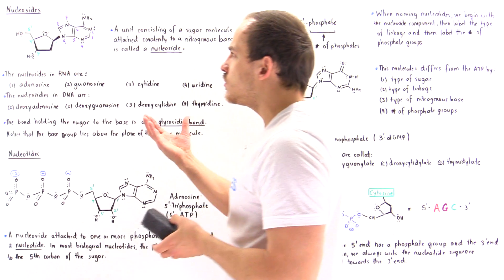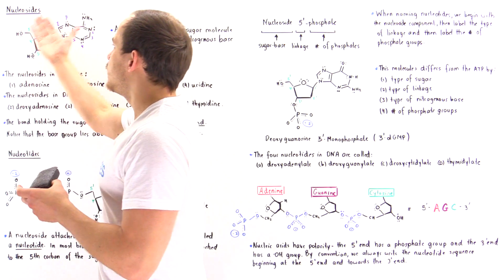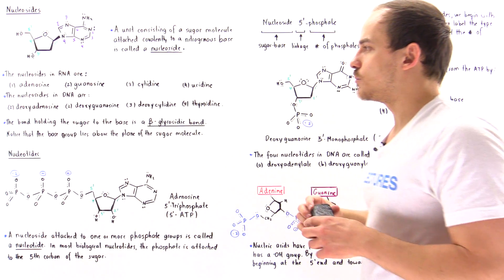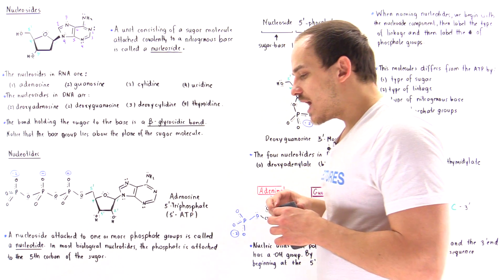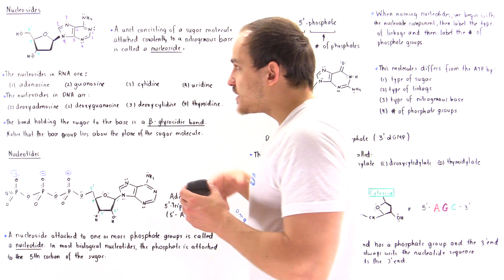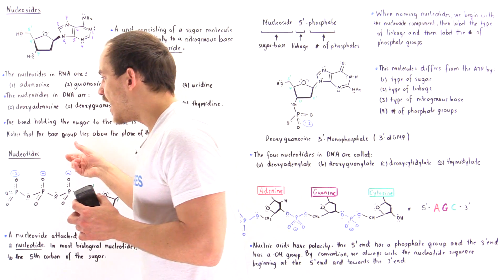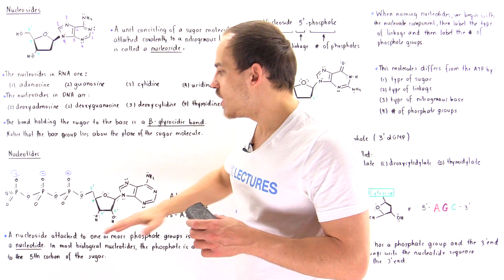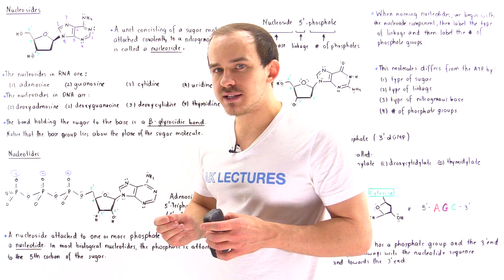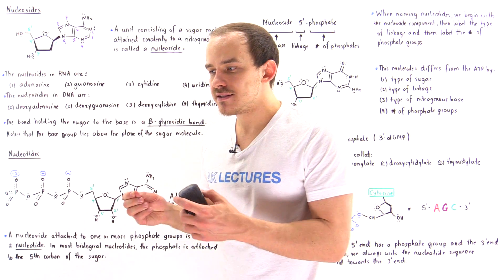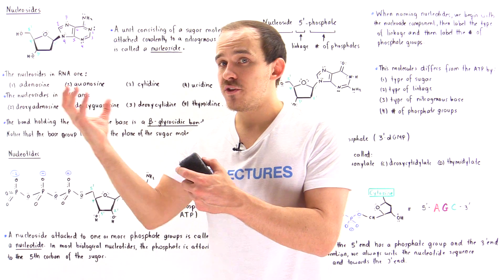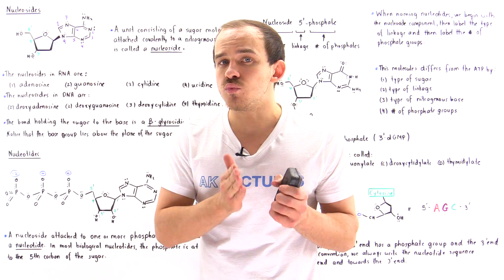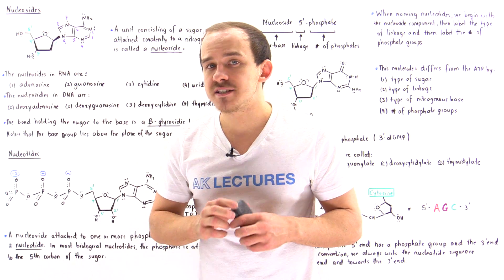When we normally draw nucleosides, this is how we portray our nucleoside. All a nucleoside is, is basically the nucleotide minus the phosphate group. The way that we define a nucleotide is by saying we have a nucleoside that contains at least one phosphate group.